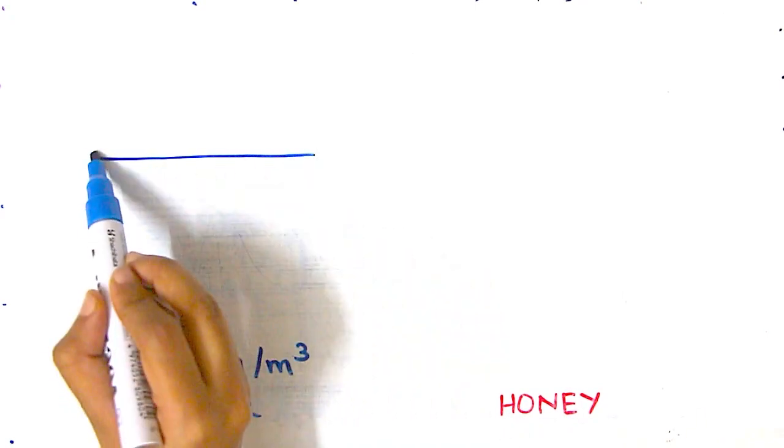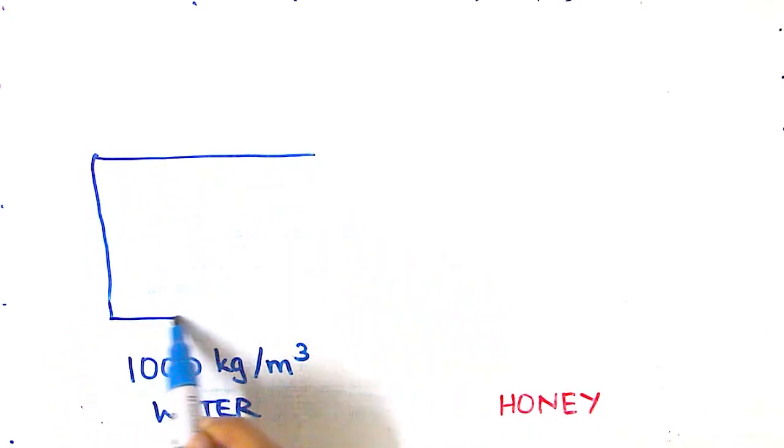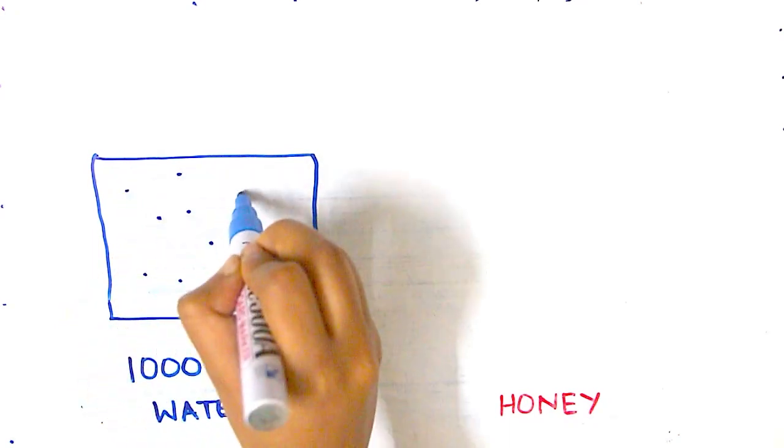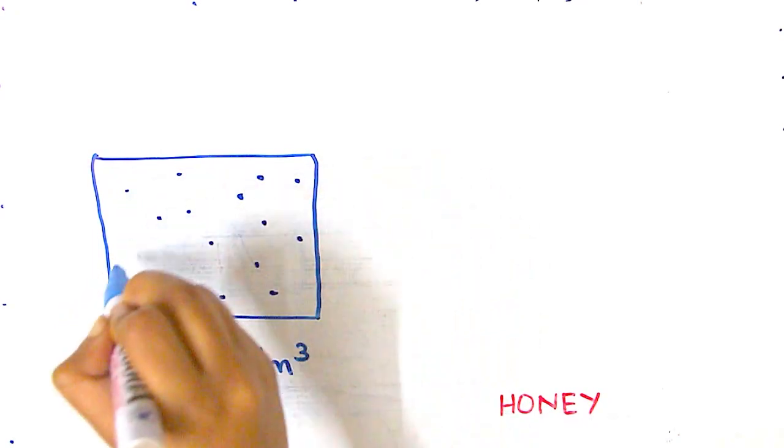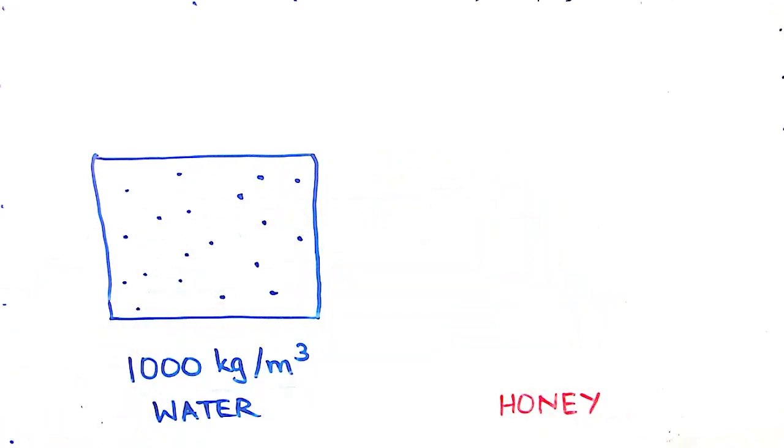The density of water is 1000 kilograms per meter cube. What this means is that if I take a cube-shaped container which has a volume of one meter cube, and if I were to fill this completely with water, the water in this cube would weigh 1000 kilograms. That is what the density of water represents.